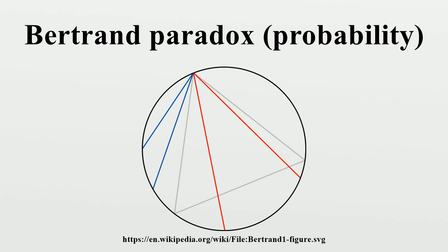The problem's classical solution hinges on the method by which a chord is chosen at random. It turns out that if, and only if, the method of random selection is specified does the problem have a well-defined solution. There is no unique selection method, so there cannot be a unique solution. The three solutions presented by Bertrand correspond to different selection methods, and in the absence of further information there is no reason to prefer one over another.